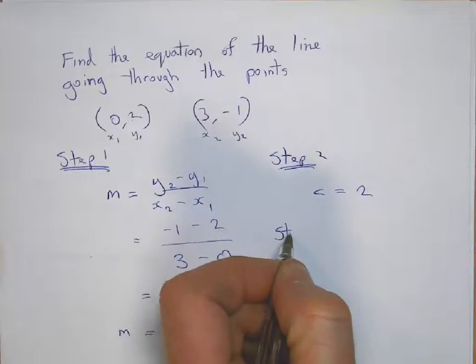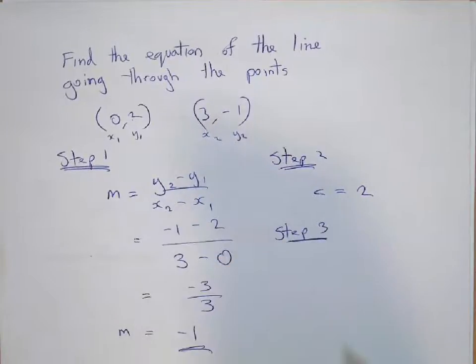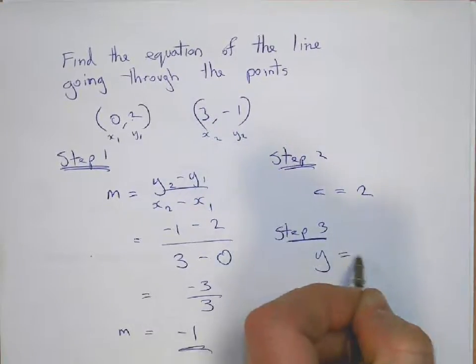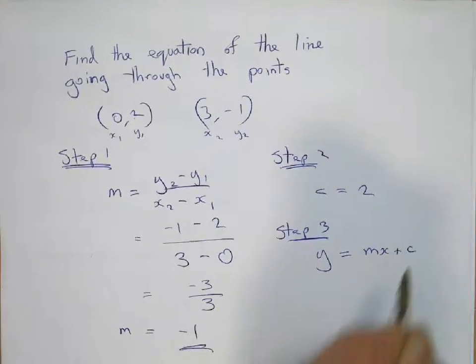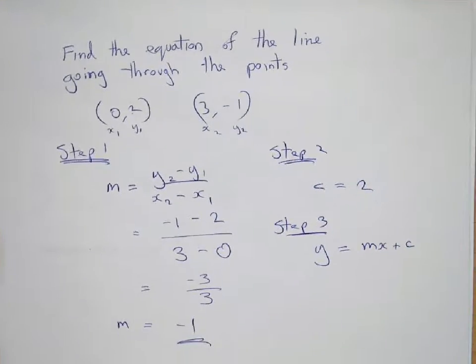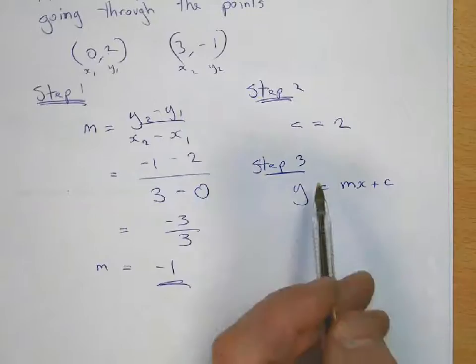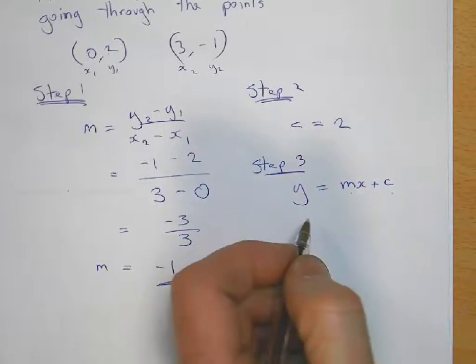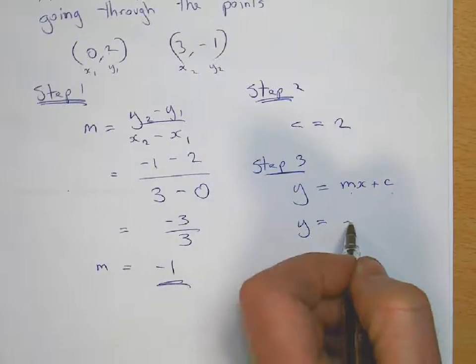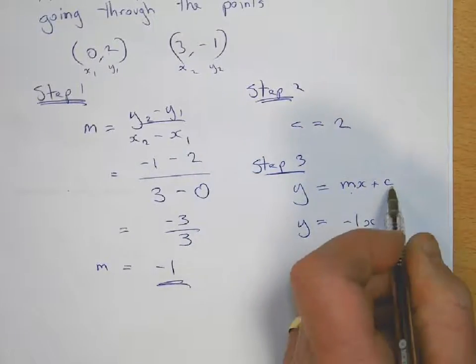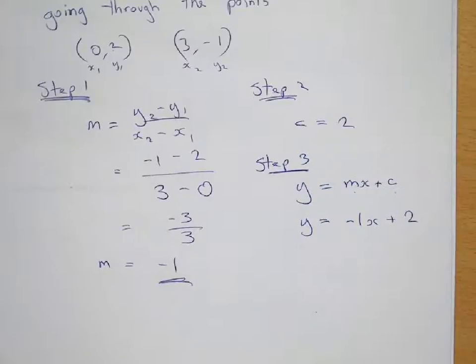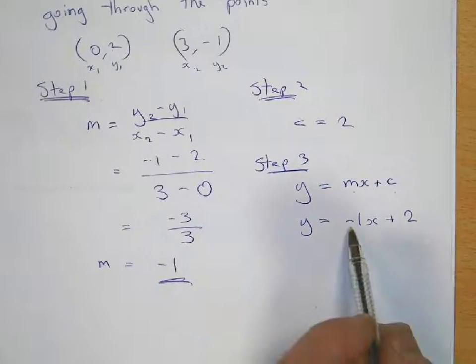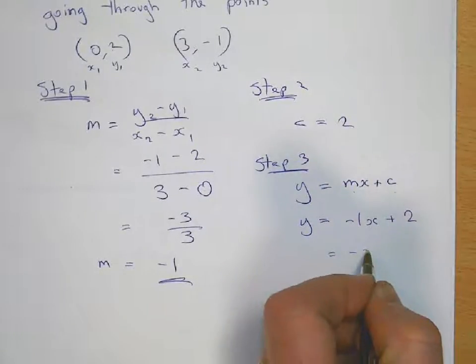Step three, the equation of the straight line is always y equals mx plus c. So we know the gradient, which is m, and we also know what the y-intercept is. We can therefore write down the gradient is minus one x plus the value of c, which is two. And just to tidy up, you don't need minus one x. You can just write minus x plus two.